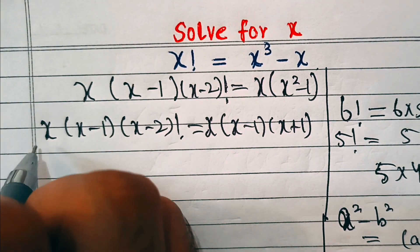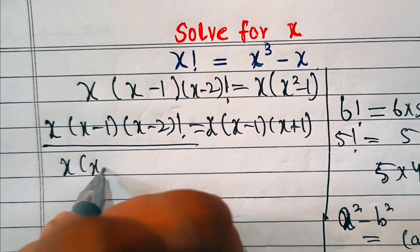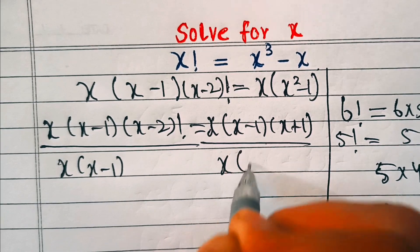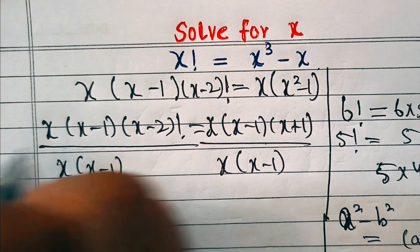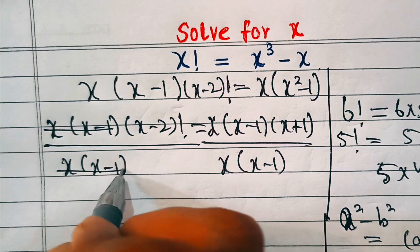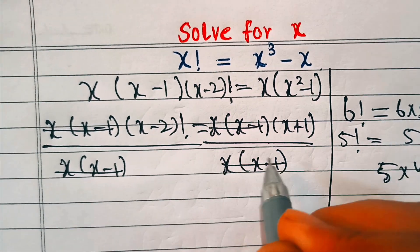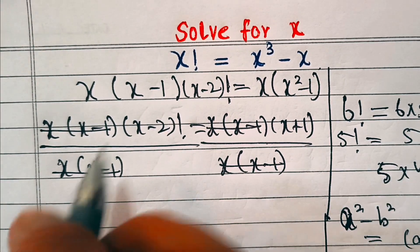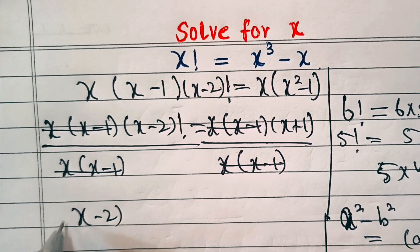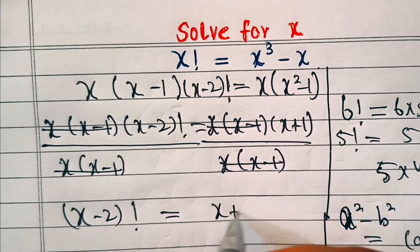Now let's divide both sides by x into (x minus one). On the left side, x and (x minus one) cancel out. Similarly on the right side they cancel out, so we're left with (x minus two) factorial equal to (x plus one).